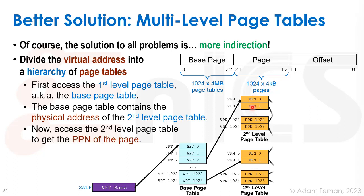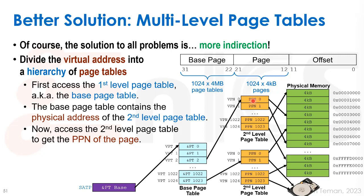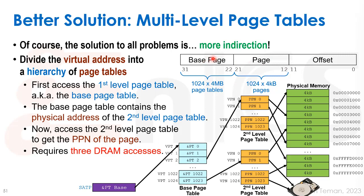Each second-level page table points to the base of a regular page table accessing four-kilobyte pages, but each is only 1024 entries. From there we get the actual physical page number, pointing to either physical memory or disk. Since address spaces are very sparse, this lets us have much smaller page tables overall. The downside is we now need multiple DRAM accesses: one to get the first-level translation, a second for the second-level translation to get the physical page number, and a third to get the actual page data. With 64-bit addresses we may have even more hierarchy levels, making page walks very costly.